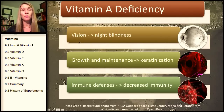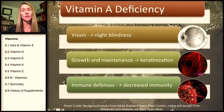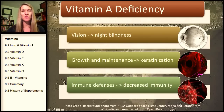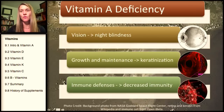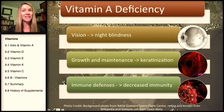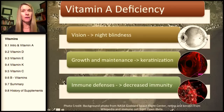Vitamin A deficiency can lead to problems with vision, growth and maintenance, conditions of the skin such as keratinization, and decreased immunity. Most people are most familiar with the connection between vitamin A and vision. Looking at the eye, we have the cornea, the pupil, and the retina in the back. When UV light comes into the eye and passes through the cornea, one of the functions of vitamin A is to help maintain the cornea and its sheath, as well as the retina.